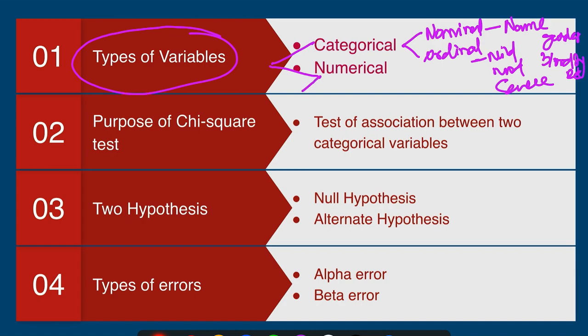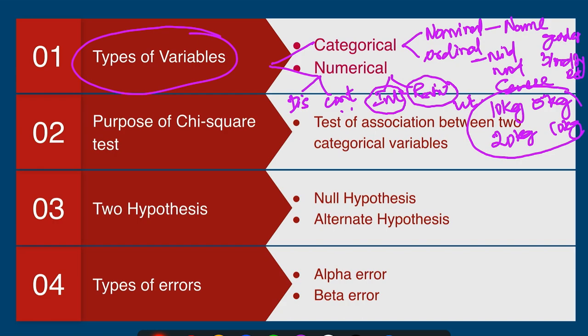Numerical variables can be divided into two types: discrete and continuous. Discrete means whole numbers, and continuous means there will be decimals. Numerical variables can also be divided into interval and ratio. The example for a ratio scale is weight. For chi-square calculation, you just need to remember there are two types of variables: categorical and numerical.